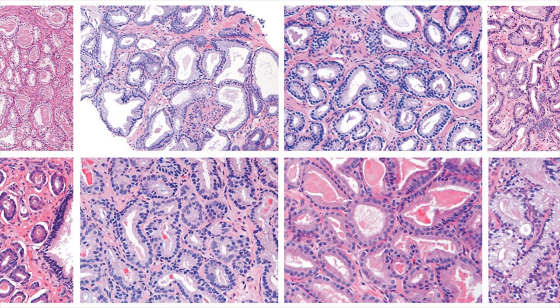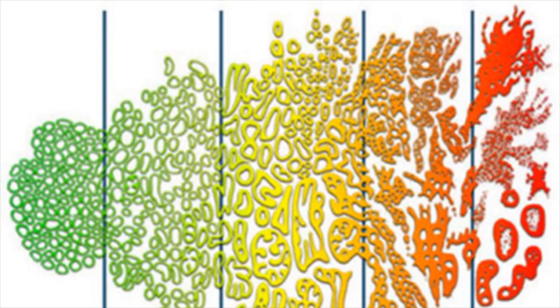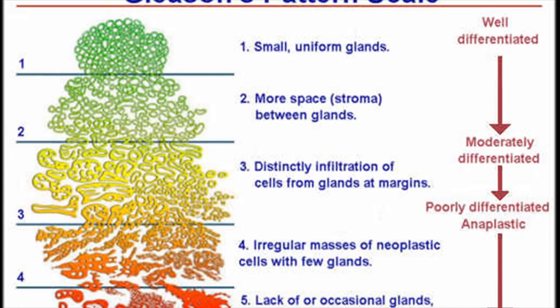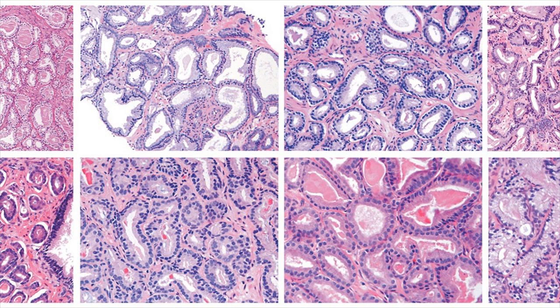The Gleason Score is based on the sum of these two numbers: tissue grade and cell type grade. A Gleason Score of 5 plus 5 equals 10 indicates a highly aggressive prostate tumor, while a low score of 2 plus 2 equals 4 indicates a less aggressive cancer.